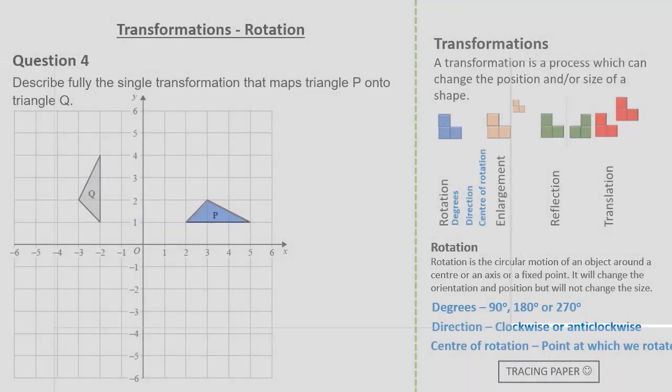Firstly let's have a look at the degrees. Tracing triangle P to make the same orientation as triangle Q it's clear it must be a 90 degree rotation. We can also see that it's 90 degrees anticlockwise. So we have two pieces of information so far. So let's find the centre of enlargement.